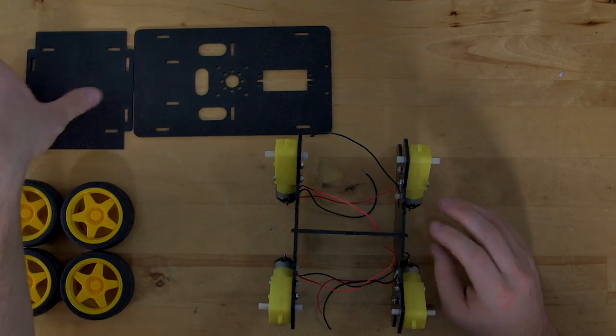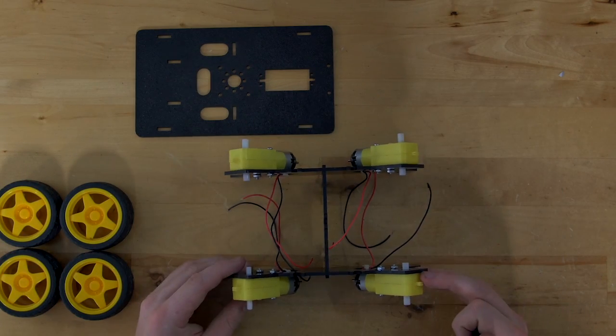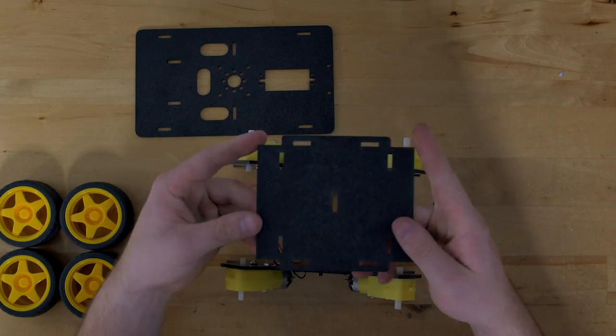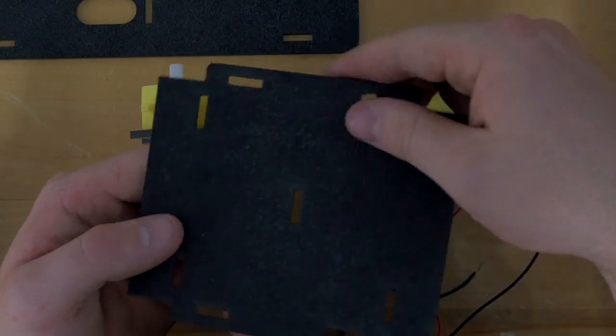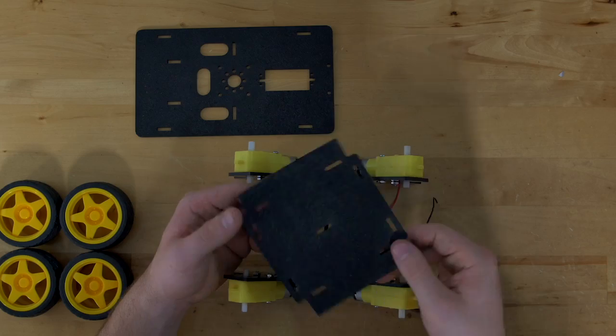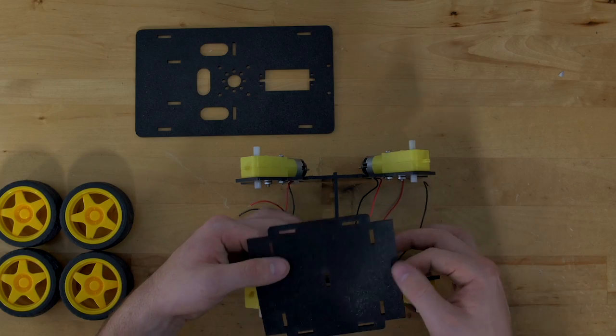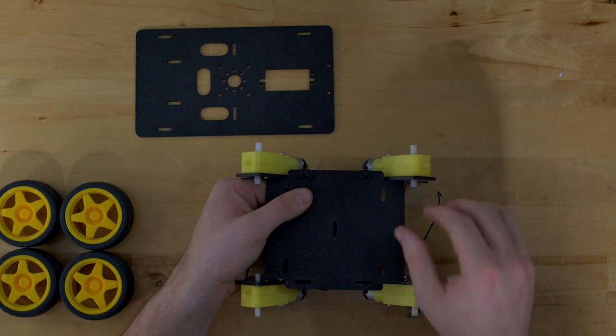Once you have that together, attach this bottom plate. You'll see you have two connectors on each side and one in the middle. This plate also has two connectors on the side and one in the middle, either way you turn it. That can get kind of confusing, but it's really simple. The rounded side attaches to your plates that have the motors on them.